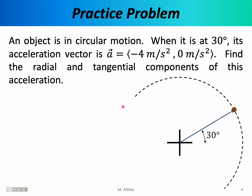Let's do a practice problem involving non-uniform circular motion. An object is in circular motion; when it is at 30 degrees its acceleration vector is (-4, 0). Find the radial and tangential components of this acceleration. We're imagining an object at an angular position of 30 degrees relative to the positive x-axis. At this moment its acceleration vector in Cartesian coordinates is (-4, 0), meaning it has an x-component of -4 and a y-component of zero.